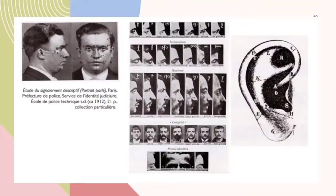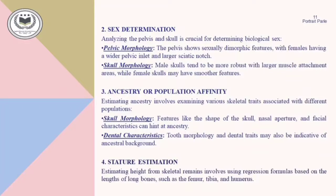Another characteristic is sex determination. Biological characteristics such as pelvic morphology are examined — females have a wider pelvic inlet and larger sciatic notch due to childbirth. Skull morphology is also considered: male skulls tend to be more robust with larger muscle attachments, while female skulls have smoother features. For ancestry or population affinity, estimating ancestry involves examining various skeletal traits associated with different populations, such as skull morphology — the shape of the skull, nasal aperture, and facial characteristics can hint at ancestry.